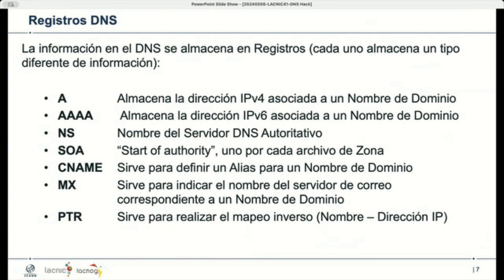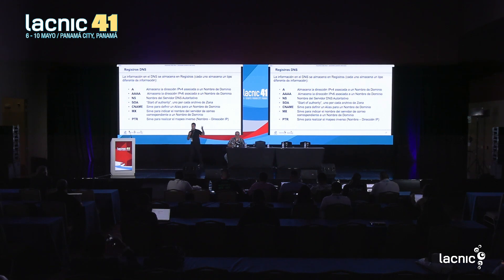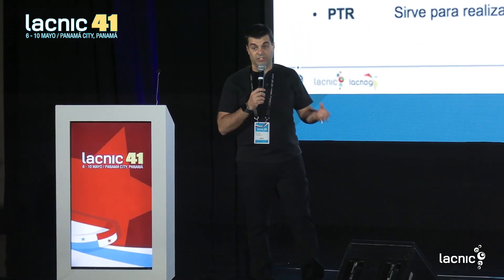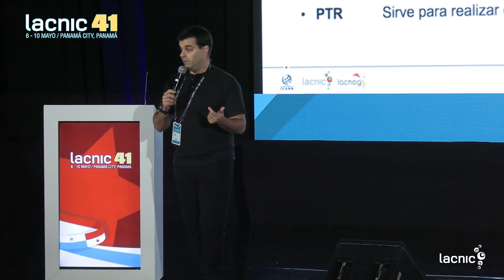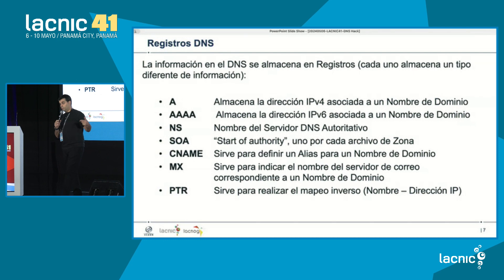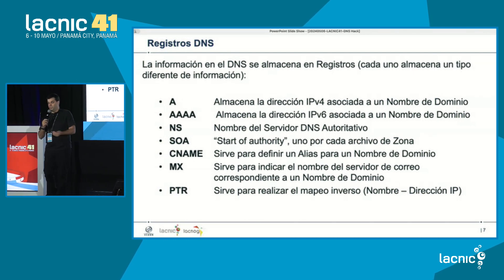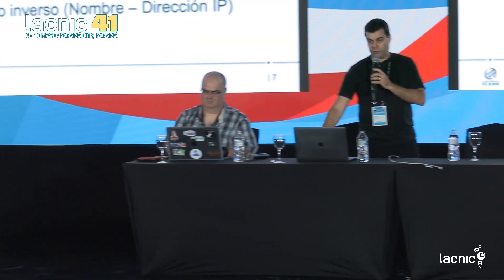¿Qué tipo de información se almacena en el DNS? Podemos almacenar varios tipos de información. Hoy en día hay más de 87 tipos de registros diferentes en el DNS. Los registros de DNS son los contenedores donde almacenamos la información en el sistema de nombre de dominio. Hay un contenedor diferente para cada tipo de información que quiero almacenar. Tenemos un contenedor para almacenar la equivalencia entre un nombre de dominio y una dirección IP versión 4, que es el registro A. Tenemos otro para la equivalencia con IPv6, que es el registro cuádruple A. Hay más de 87 tipos diferentes de información que se pueden almacenar en el DNS.